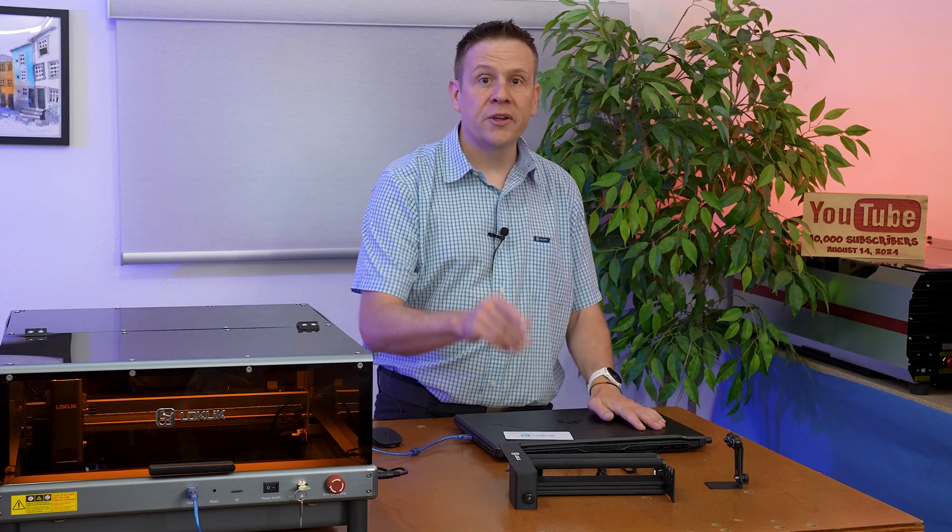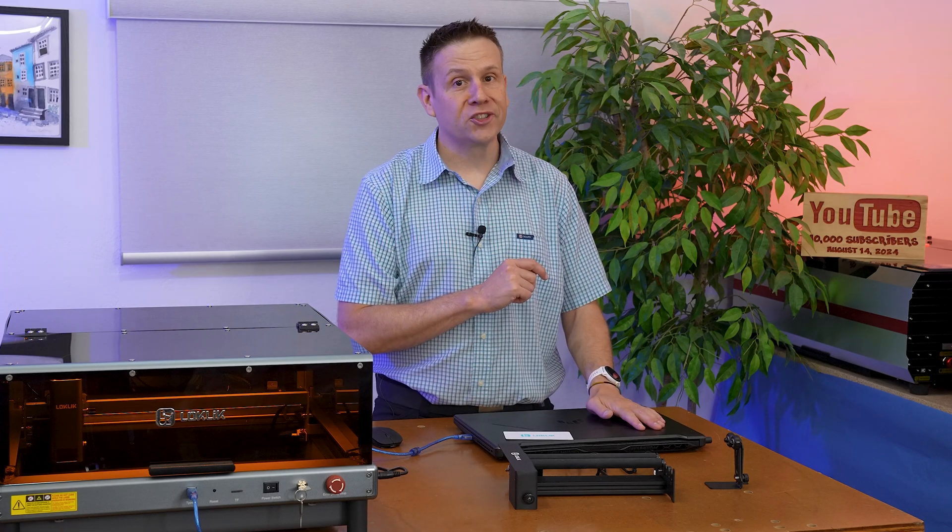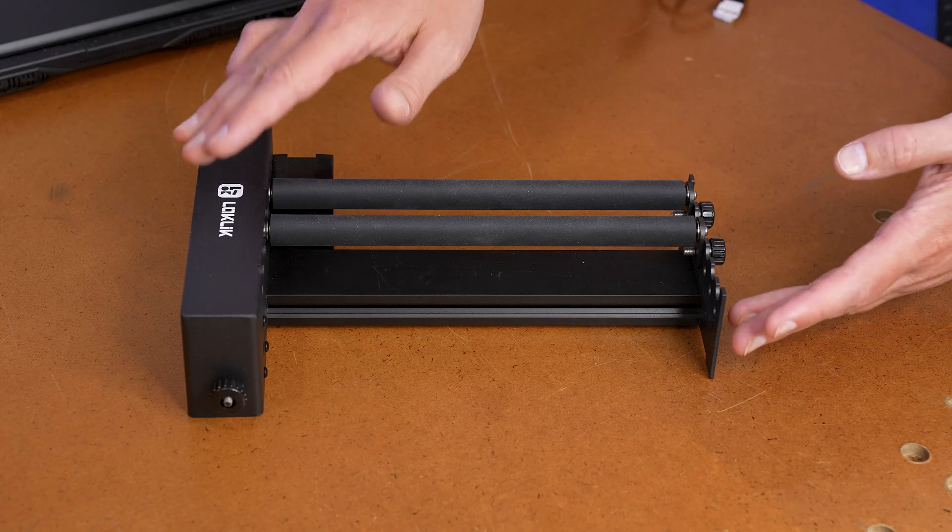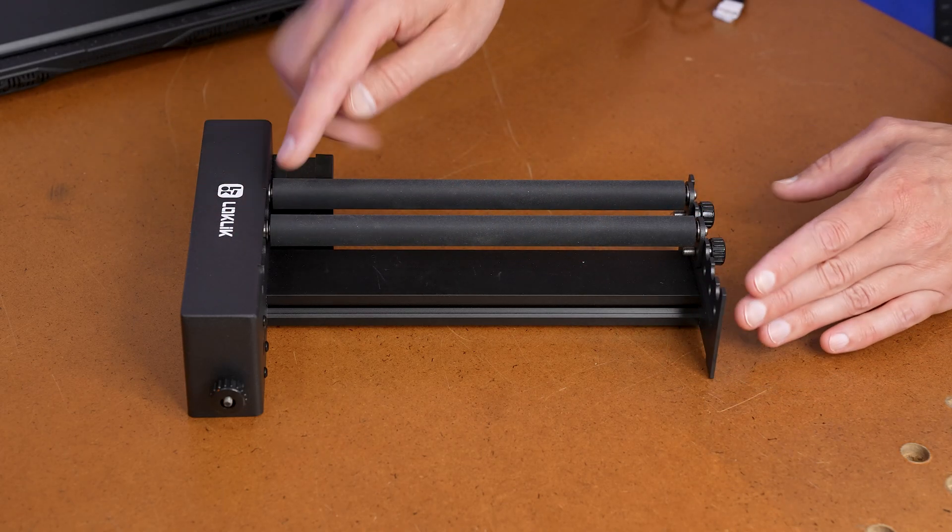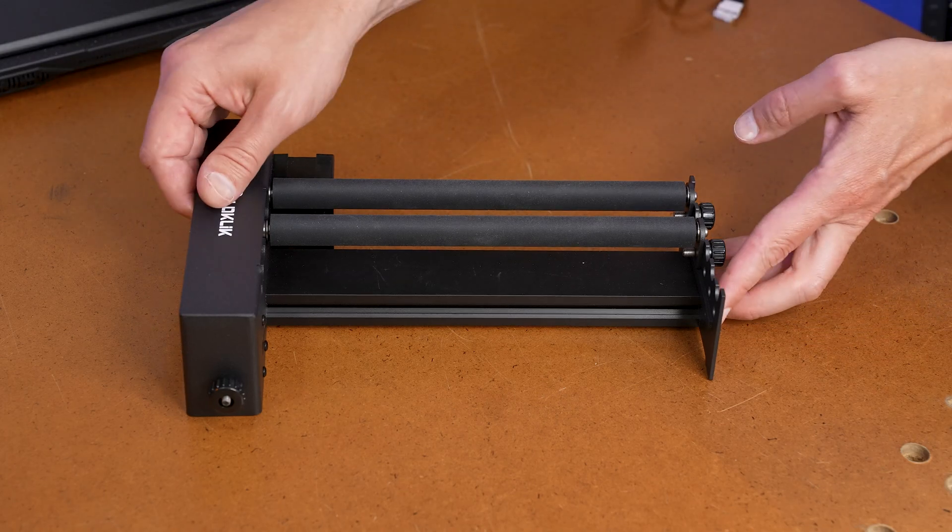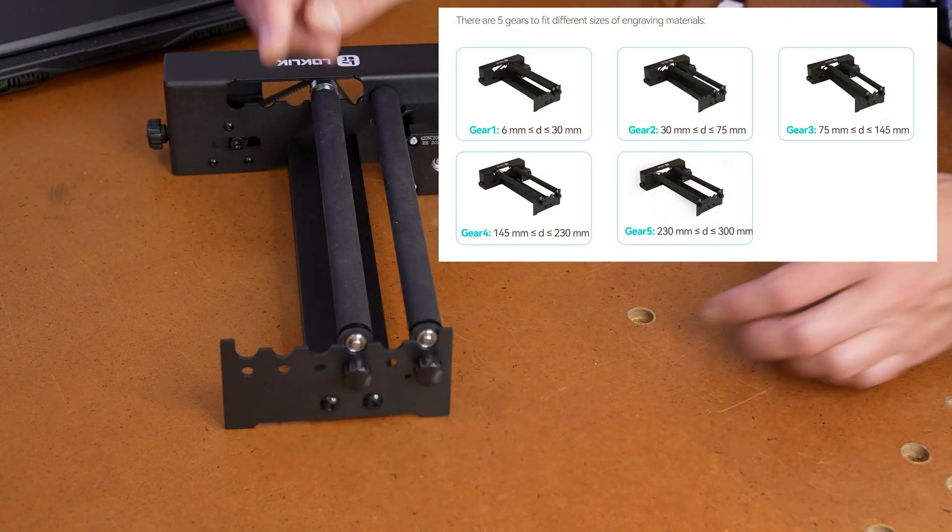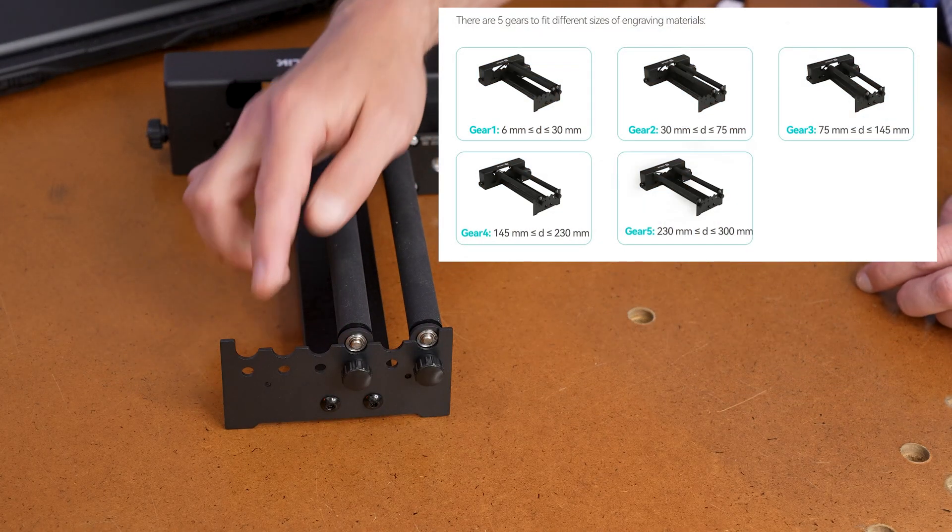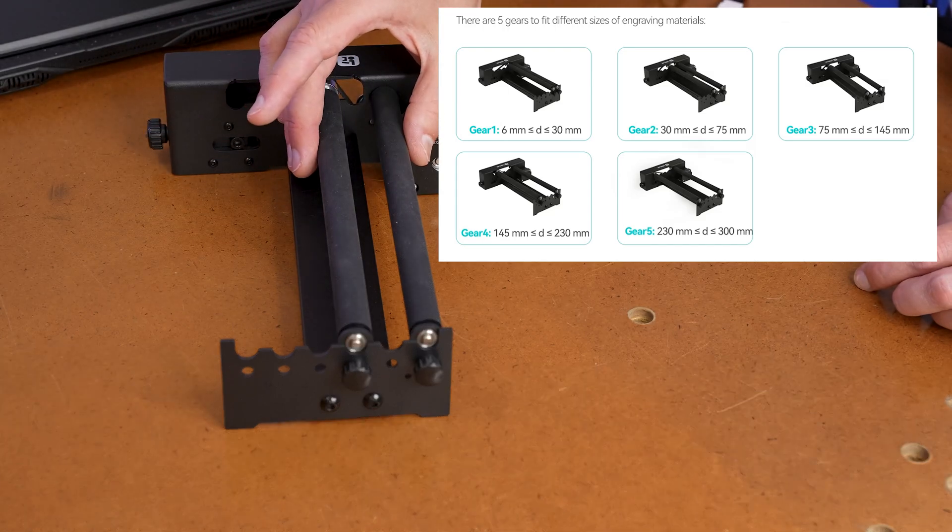Let's get started by checking out everything that's included with the rotary roller attachment. The construction of the rotary roller is all metal construction. The drive rollers here and here are rubber coated, and they are adjustable into a number of different positions depending on the size of the project material.